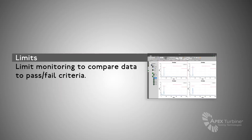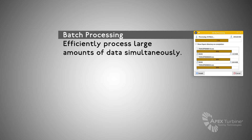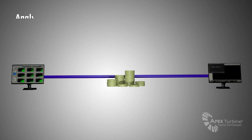The DX Limits Tool makes comparing data to pass-fail criteria efficient and easy. The brand new Parameter Merge Tool available in DX lets users merge low-speed parameter data into dynamic data with just a few clicks. The newly released DX Batch Processing Tool efficiently processes large amounts of data simultaneously, saving customers time and money.